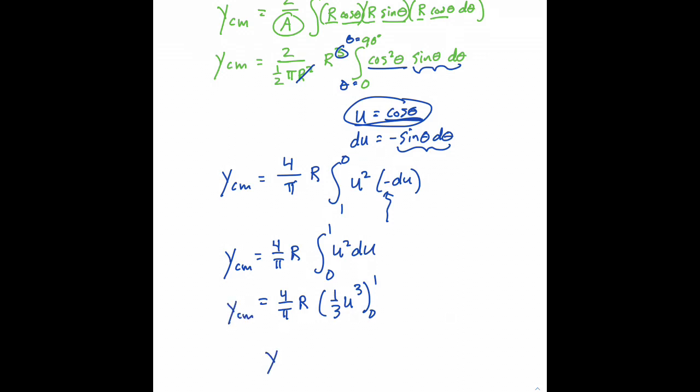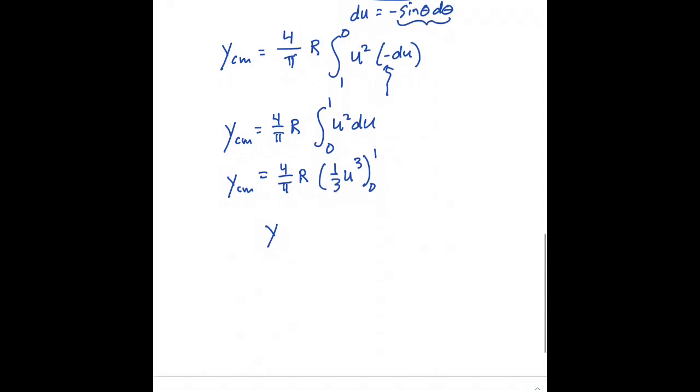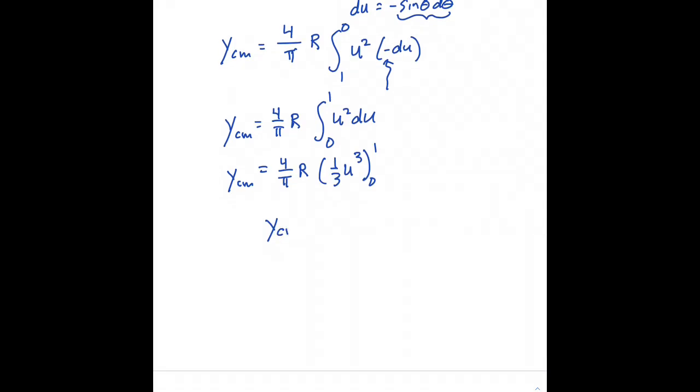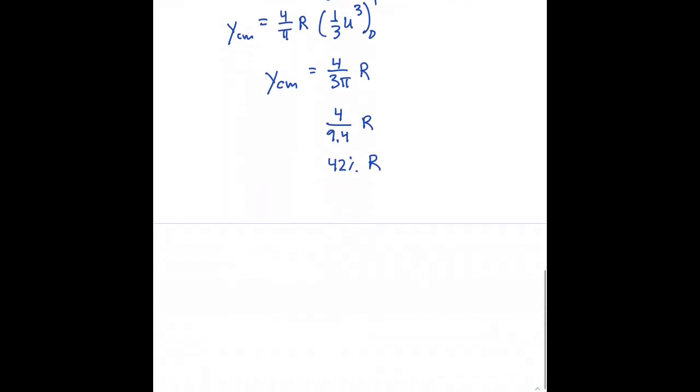So we've got our final answer. The location of the center of mass along the y-axis for a semicircle is equal to 4 over 3π times the radius and if you grab a calculator I think you can see that's the same thing as saying it's approximately 4 over 9.4 times r which is the same thing as about 42% of the radius.